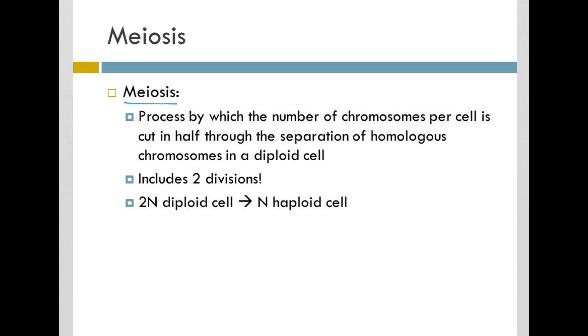So meiosis is the process by which the number of chromosomes in every cell is cut in half. So we go from 2n as a diploid cell to n, a haploid cell. And they do this through the separation of homologous chromosomes. Now remember, the fact that you're 2n means that you have homologous pairs. If you separate and no longer have those pairs, you are now haploid.